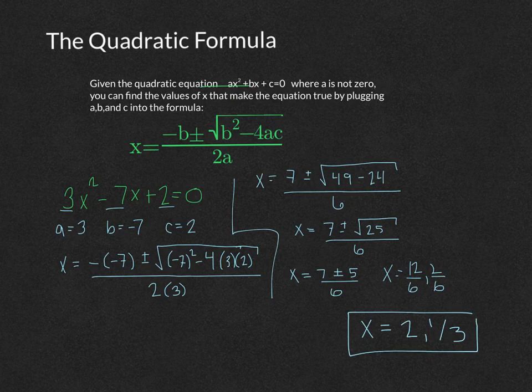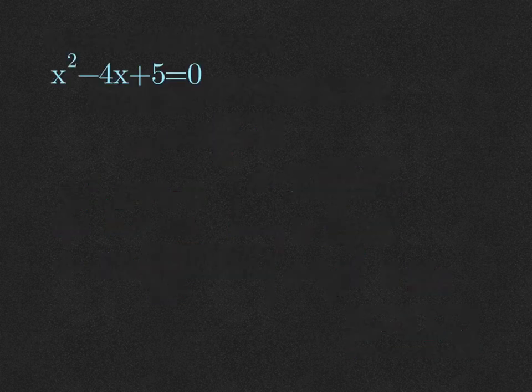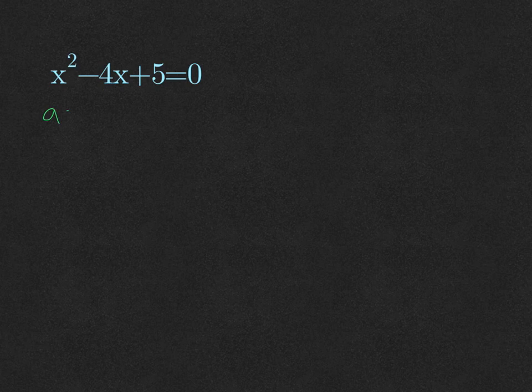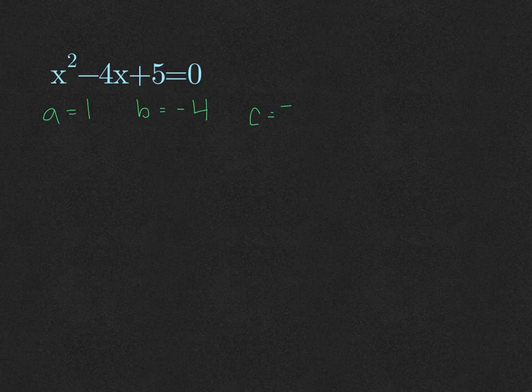Let's try one more. Let's solve x squared minus 4x plus 5 equals 0. Our a is going to be 1, our b will be negative 4, and the c will be 5.